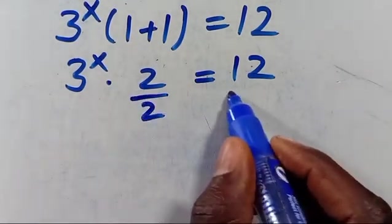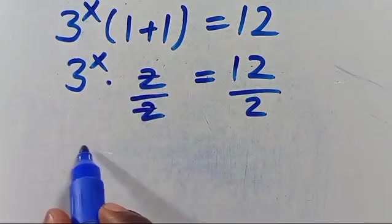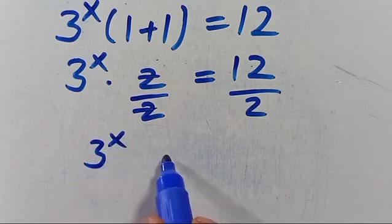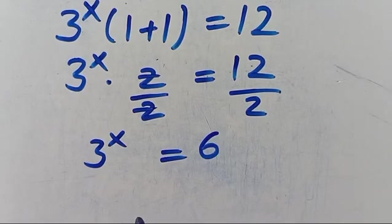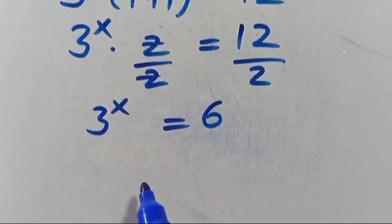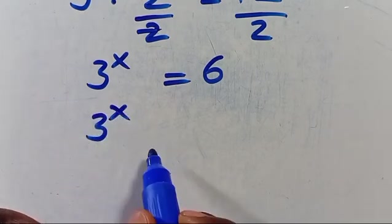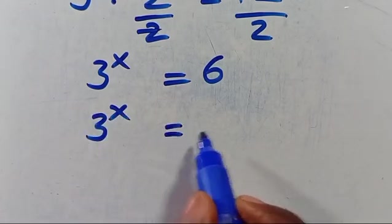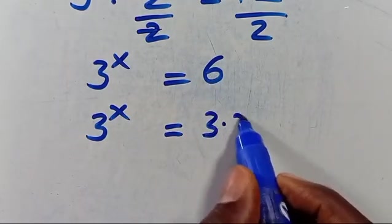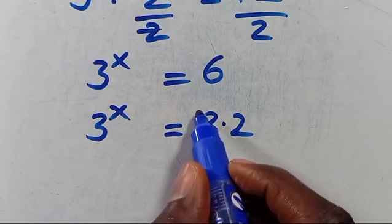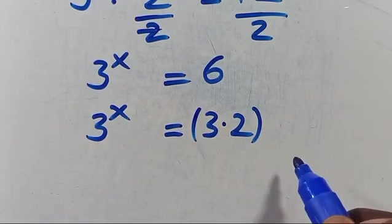Dividing both sides by 2, the twos cancel out, so we have 3 to the power of X equals 12 divided by 2, which gives us 6. So from here we have 3 to the power of X equals 6, and we can write 6 as 3 times 2 in parentheses.